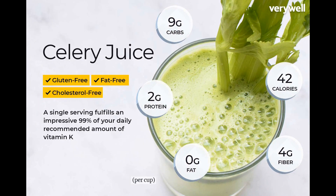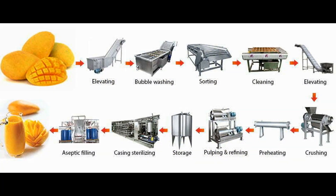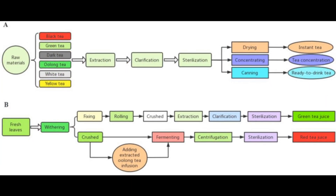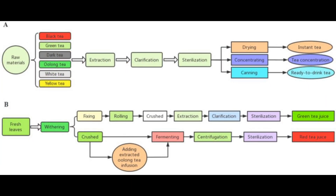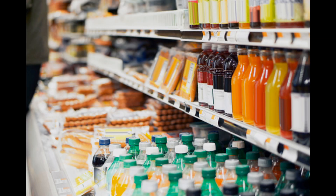In terms of production, soft beverages typically require less processing compared to carbonated beverages. For example, juices can be simply extracted from fruits and pasteurized, while tea or coffee-based drinks can be brewed and flavored with natural or artificial flavors. The lack of carbonation also means that soft beverages have a longer shelf life and can be stored without the need for pressurized containers.